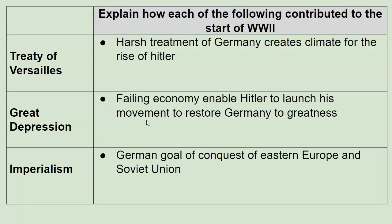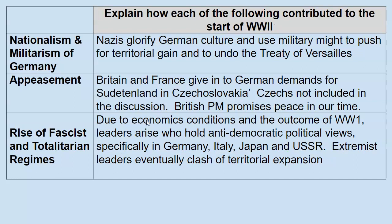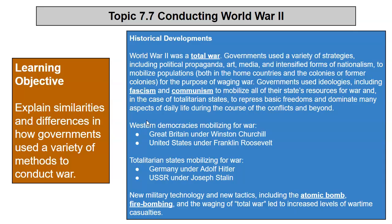Causes of World War II — we've been over a lot of these. You get the Treaty of Versailles, the Great Depression, imperialism (really the German desire for conquest in Europe and the Soviet Union), nationalism and militarism in Germany — the glorification of culture and military used to push for overturning the Treaty of Versailles and territorial gain. Appeasement is when the Germans demand part of Czechoslovakia with a minority German population, and France and Britain give it to them in 1938. The totalitarian regimes that rise up come out of economic conditions and World War I. Eventually those dictators clash.